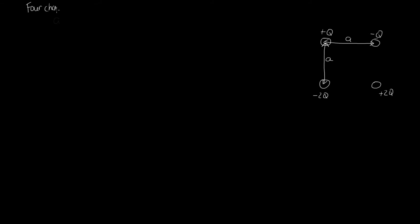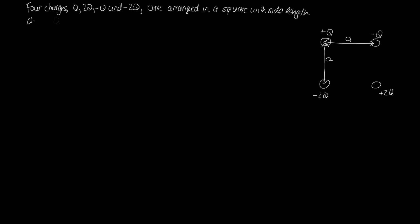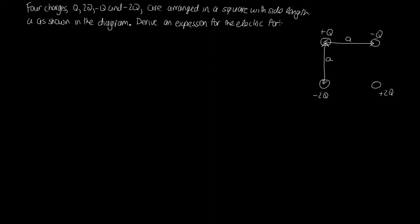In this problem we're told that four charges — q, 2q, −q, and −2q — are arranged in a square with side length a, as shown in the diagram. We're asked to derive an expression for the electric force on the +q charge due to the other charges.